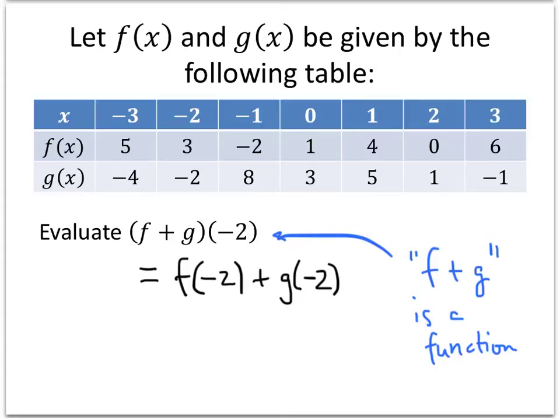So when we try to plug negative 2 into the f plus g function, what happens is we get f of negative 2 plus g of negative 2. And to find those values, we just look in our chart. Since we're plugging in negative 2, we want to look at the negative 2 column of our chart, and f of negative 2 is 3, and g of negative 2 is negative 2, and 3 plus negative 2 is positive 1.